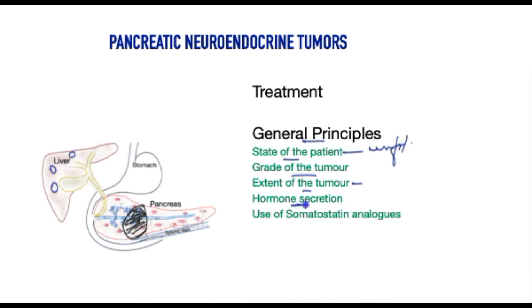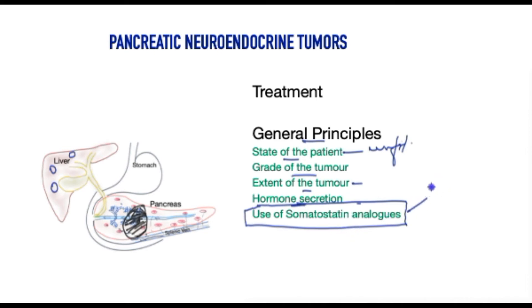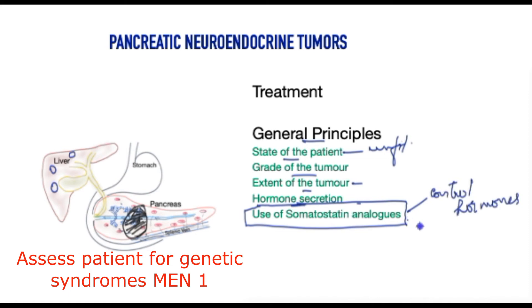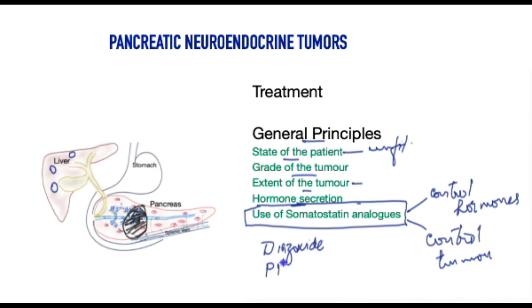Whether or not the tumour produces hormones causing symptoms, those hormone levels need to be controlled. In most if not all patients, somatostatin — a naturally occurring molecule — has been found to be extremely useful, both in controlling hormone secretion and in controlling the tumour itself. There are other medications such as diazoxide for high insulin levels, and proton pump inhibitors for high gastrin levels which lead to stomach ulcers, to help with symptom control.